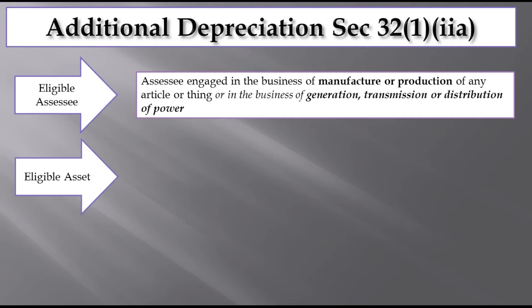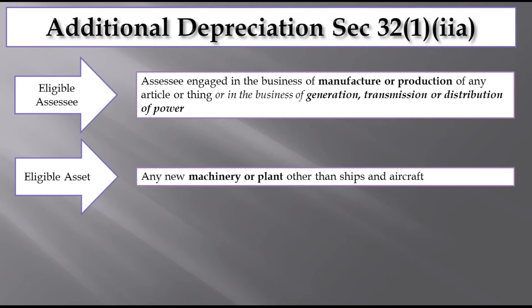I can claim this additional depreciation. Any new plant and machinery, other than ships and aircraft. Plant and machinery — how does additional depreciation apply? The category of plant and machinery is called Block of Assets. Aircraft and ships are not available in the plant and machinery category. Additional depreciation is not available for ships and aircraft. All other plant and machinery will be eligible for additional depreciation.